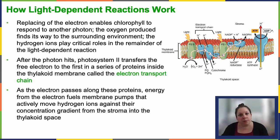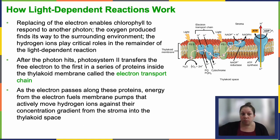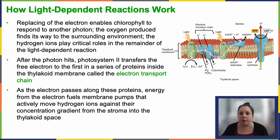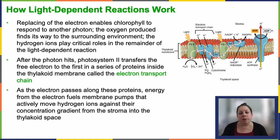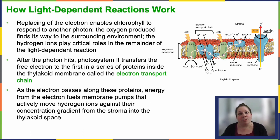With a fresh electron in place, the chlorophyll can respond to another incoming photon. The released oxygen molecules are released out into the surroundings, while the hydrogen ions become essential for subsequent steps in the light dependent reaction. In eukaryotes and certain prokaryotes, there are two photosystems. Photosystem two is the first one in line and photosystem one comes second. They're named for when they were discovered, not the order in which they participate in the reaction, which is kind of unfortunate.